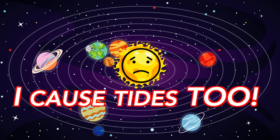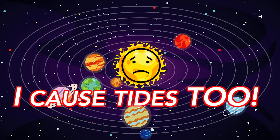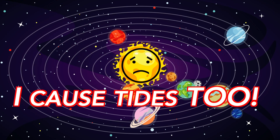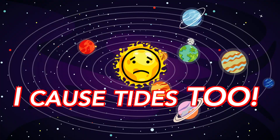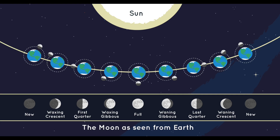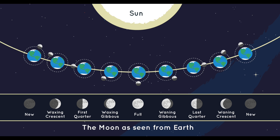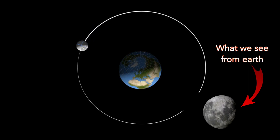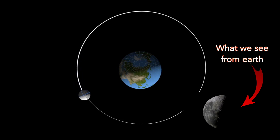Now we know that the moon affects tides, but what about the sun? The sun's gravity also pulls on Earth's oceans, though not nearly as strongly as the moon's. While the sun is huge, it's super far away. So let's take a quick look at the moon phases, because they're a result of the sun and moon's positions relative to Earth. It takes the moon around a month to orbit Earth, and its position around the Earth gives us our moon phases.